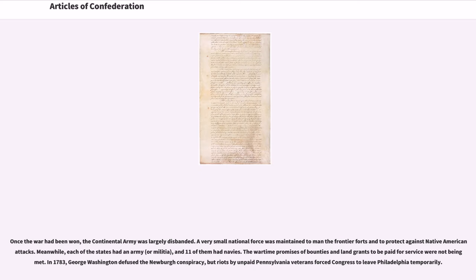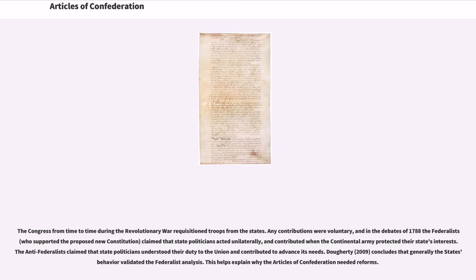Once the war had been won, the Continental Army was largely disbanded. A very small national force was maintained to man the frontier and protect against Native American attacks. Meanwhile, each of the states had an army or militia, and eleven of them had navies. The wartime promises of bounties and land grants to be paid for service were not being met. In 1783, George Washington diffused the Newburgh Conspiracy, but riots by unpaid Pennsylvania veterans forced Congress to leave Philadelphia temporarily. The Congress from time to time requisitioned troops from the states; any contributions were voluntary.